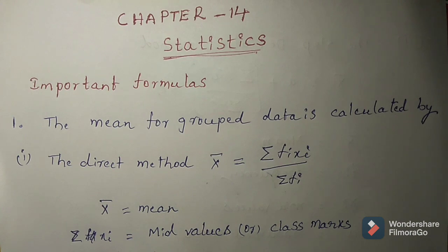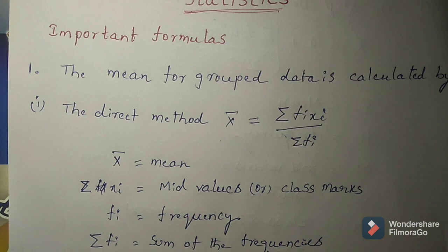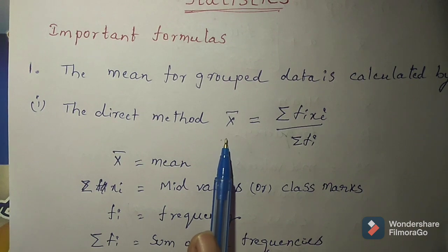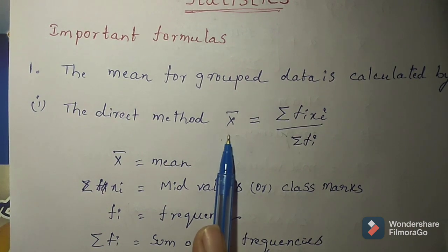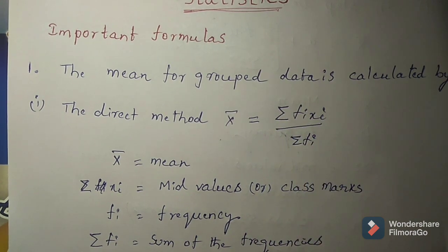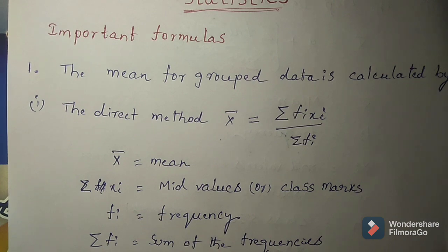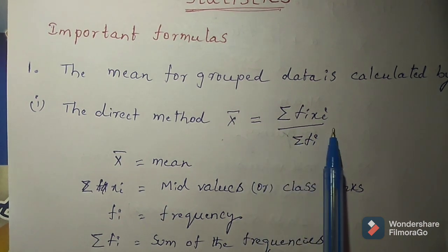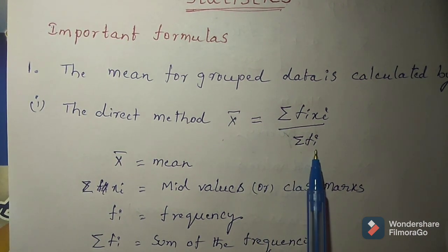So what are the formulas? The first method is the direct method. What is the formula for direct method for mean? x̄ means mean. The formula is: x̄ equals sigma fi xi by sigma fi. These come from two marks in our examination. So x̄ equals sigma fi xi by sigma fi for direct method for finding mean.